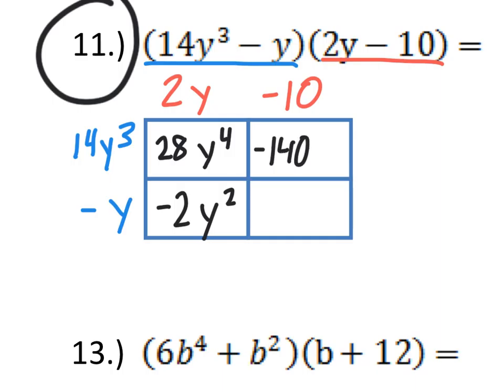Same idea for the other boxes. This box comes from 14y cubed and negative 10. So, 14 times negative 10 is negative 140, and then y cubed is the only variable, so it stays there, y cubed. And then the final box, negative y times negative 10. Negative 1 times negative 10 is positive 10, and then y is the only variable again.